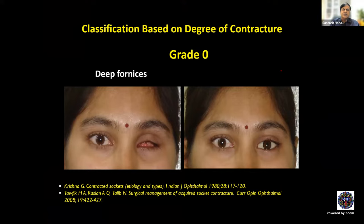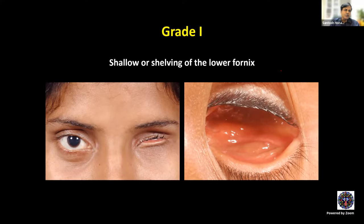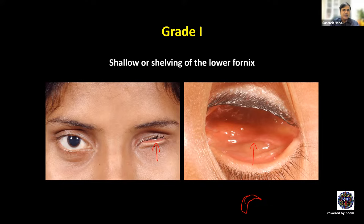Classifications of contracted socket: mild, moderate, severe, or numerical grading. The most popular in India is the Gopal Krishna classification. Grade 0 — deep fornices, no contracted socket, adequately sized prosthesis can be inserted and retained. Grade 1 — shallowing of the lower fornix. The lower fornix is the most crucial fornix — the weight-bearing one. Shallowing is when the lower lid is everted, also called shelving.